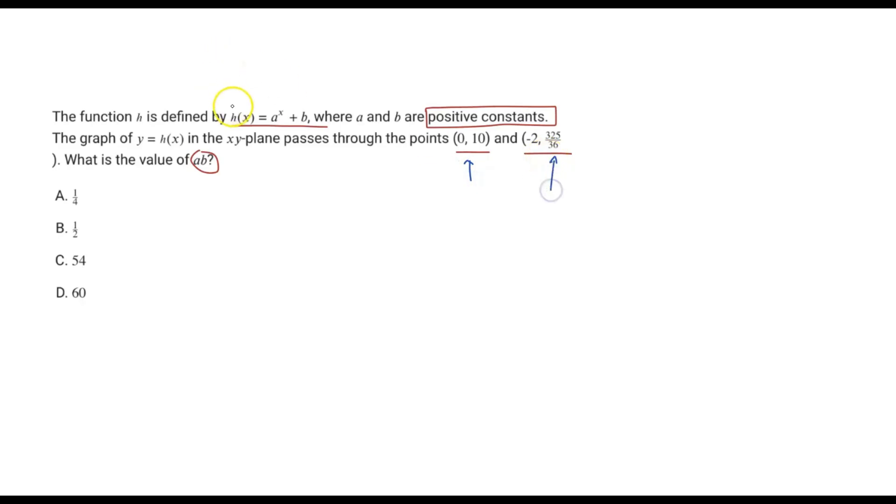h(x) is just our output or our y value. We can see here in the first one our y value or output will be 10, so we have 10 equals... we don't know what a and b are but we can figure it out from these values.